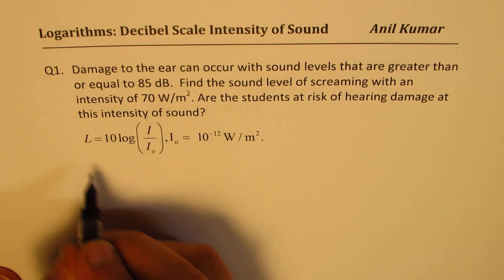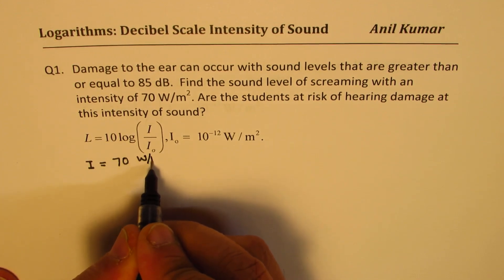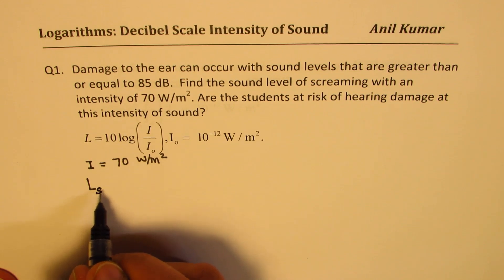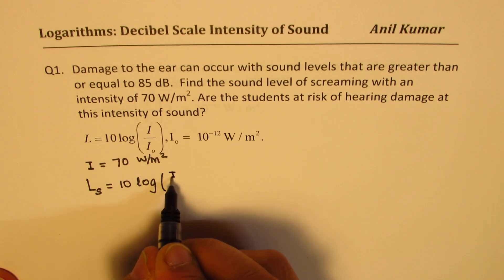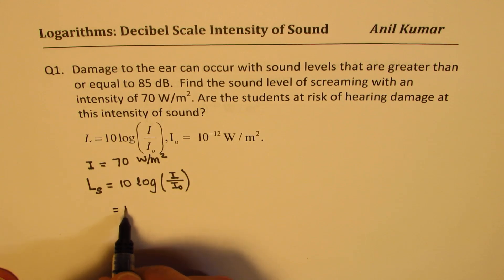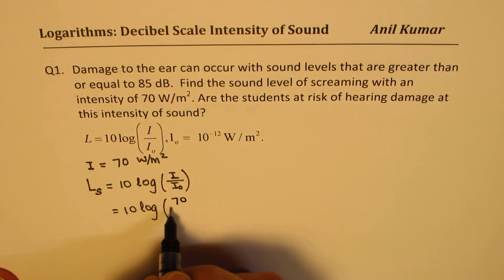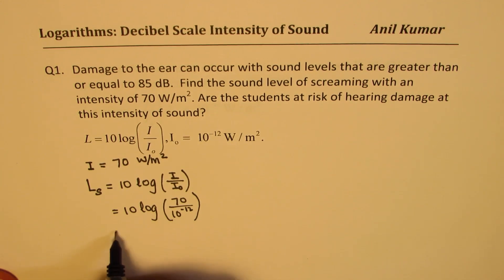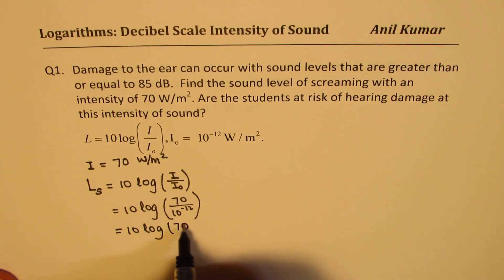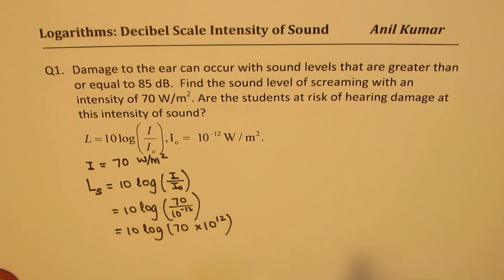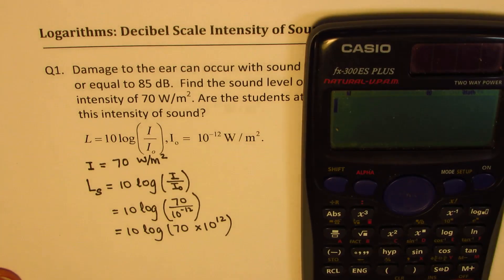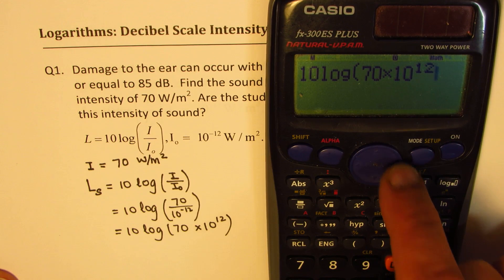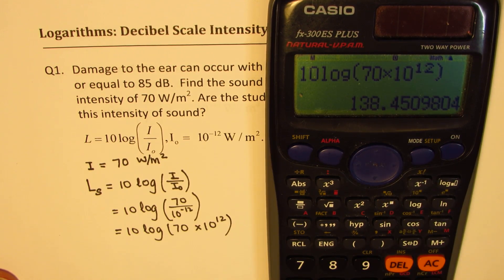We are given the value of I — intensity is 70 watts per meter square — and we know the default value of I₀. So the loudness for screaming will be 10 times log of I over I₀. That gives us 10 times log of 70 over 10 to the power of minus 12, which we can rewrite as 10 times log of 70 times 10 to the power of 12. We can use a calculator to find this value: 10 times log base 10 of (70 times 10 to the power of 12), which equals 138.45.